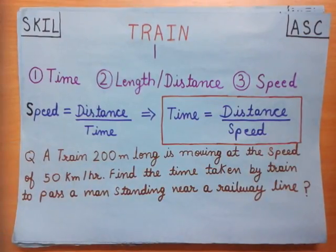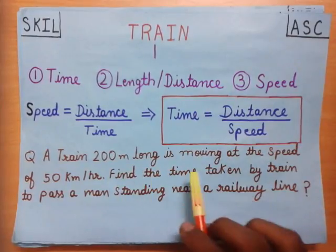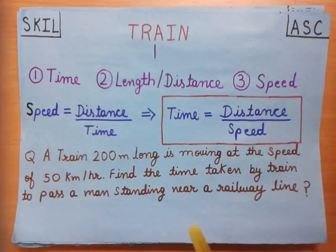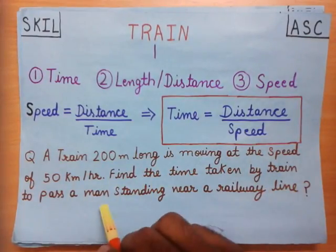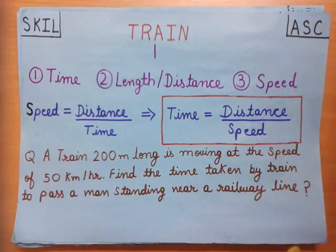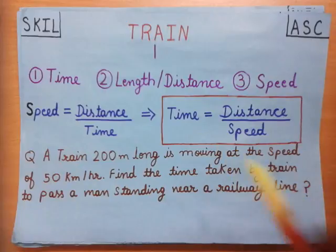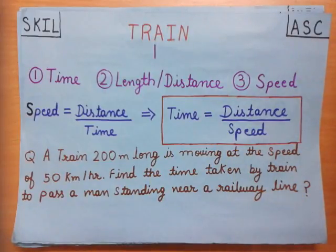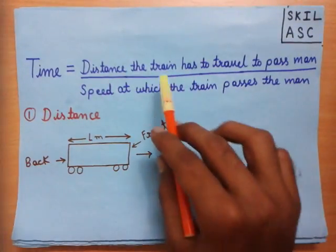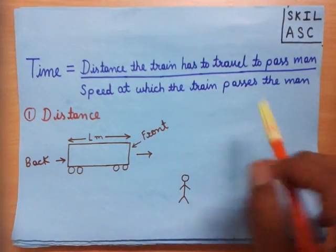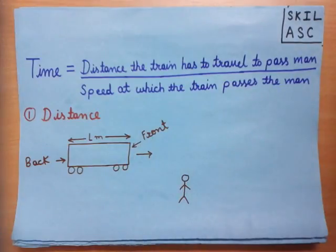Consider a basic question: a train 200 meters long is moving at a speed of 50 km per hour. Find the time taken by the train to pass a man standing near a railway line. In this question, we have to find the time taken by the train to pass the man. To find time, we first need to find distance and speed — the distance the train has to travel to pass the man, and the speed at which the train passes the man.